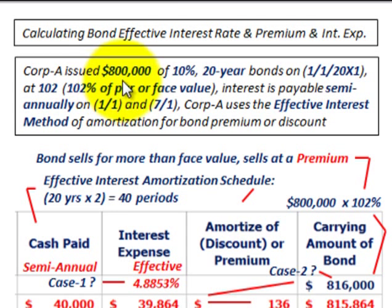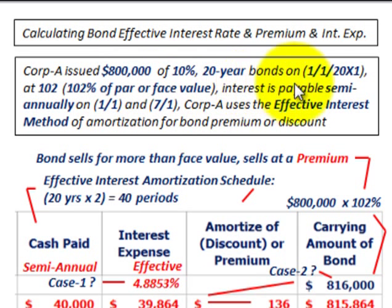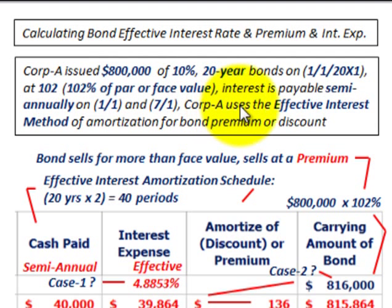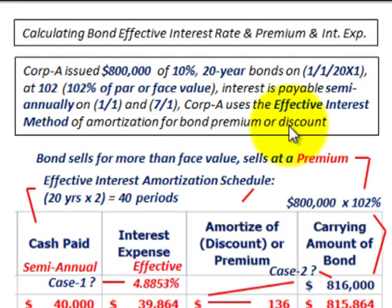So that's simply taking $800,000 times 102% to get the issue price. The interest is payable semi-annually, twice per year, on January 1 and July 1 each year. Corporation A uses the effective interest method for amortizing a bond — either the bond premium or the bond discount.